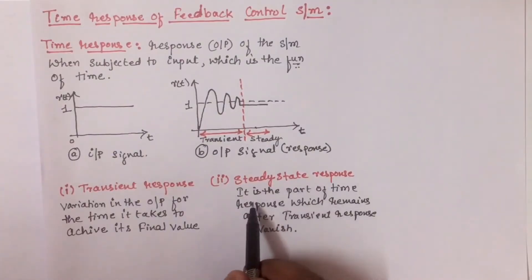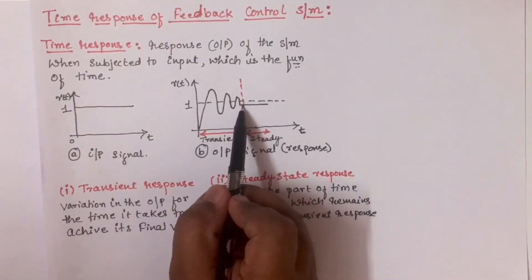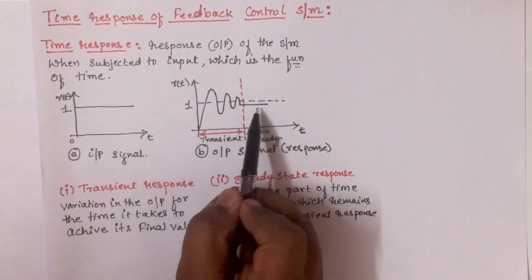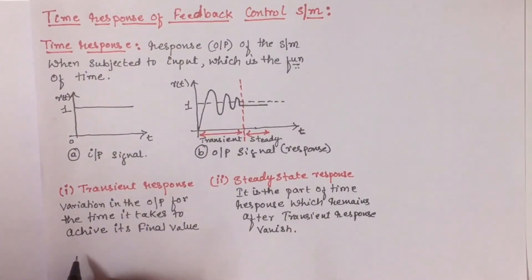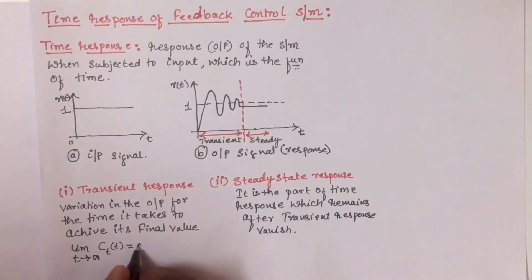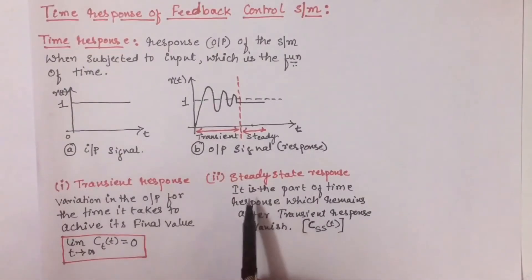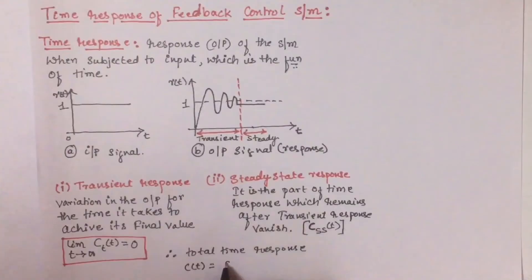We can define transient response as the variation in the output for the time it takes to achieve the final value. The steady state response is the part of the time response that remains after the transient response vanishes. So after the transient response ends, whatever response is there, we will call that steady state response. Symbolically, we can denote transient response as C_T(t), and for a stable system, the limit as t tends to infinity of C_T(t) should be equal to 0. We can represent steady state response as C_SS(t).